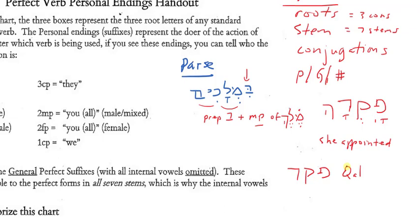Stem has to do with how the subject is related to the verbal action. Whether the subject is active or passive. Whether the subject is causing someone to do an action or being caused to do an action. And, again, as I mentioned, there are seven stems.